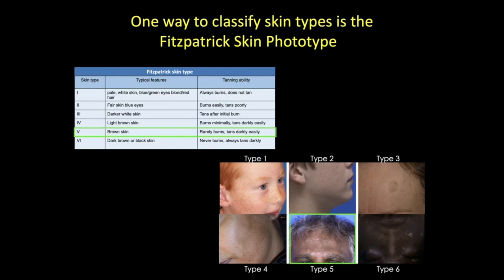Here we have a type five, which is darker skin that burns less and tans more easily. Though subjective in part due to self-reporting of skin burning or tanning, Fitzpatrick skin typing has proven diagnostic and therapeutic value.